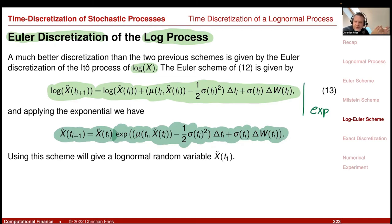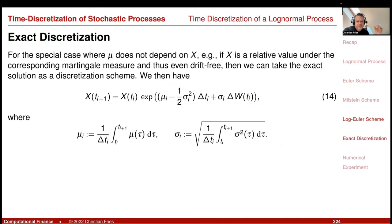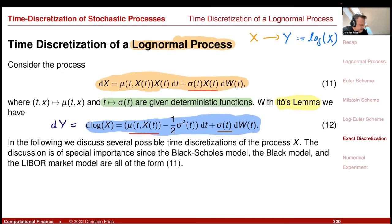In the constant-coefficient case, you know the distribution explicitly and can say the new value is the previous value times the exponential of this random variable — that is the exact solution. You can also do an exact discretization when you have time-dependent parameters, if you know the integrals of μ(t) and σ(t) analytically over each time interval.